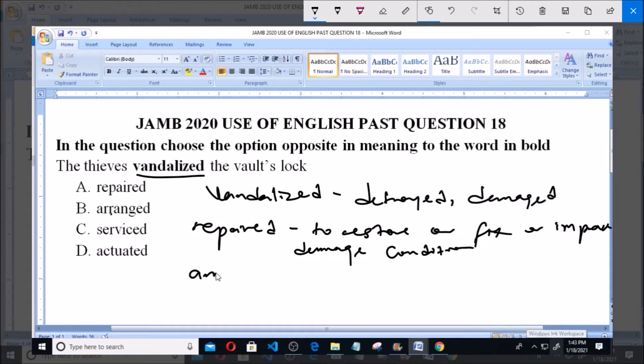Option B says arranged. Now arranged simply means to organize or to set up. Option C says serviced. Now serviced represents to perform maintenance, just like how you service your car.